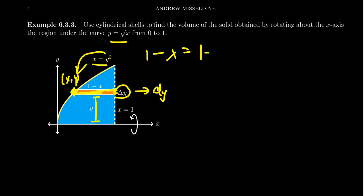But if we're going to integrate with respect to y, we don't want a function in terms of x. We want a function in terms of y. So if you solve for x, you get x equals y squared. So you're going to get 1 minus y squared. This is the height of your rectangle. The radius that you spin in will be y. And the thickness is a dy.